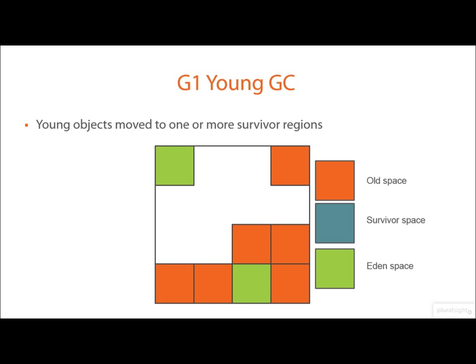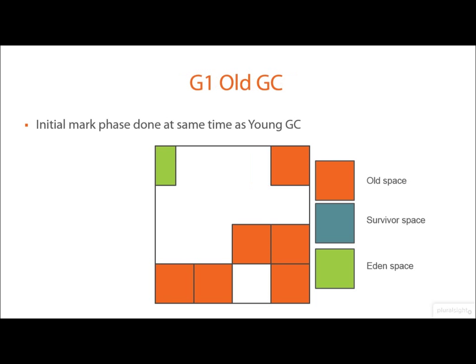So here, for example, we have some memory allocated into Eden space and some memory in old space. When a GC runs on the young generation, the memory in Eden space is collected and gathered together into a region that's designated as a survivor region.